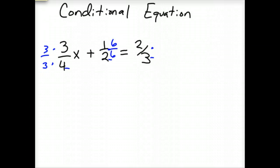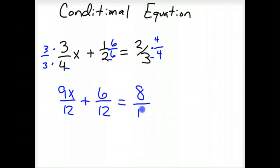And on this one, 3, we need a 4 over 4, because that would make 12 on the denominator. So now we've got 9x over 12 plus 6 over 12 equals 8 over 12.